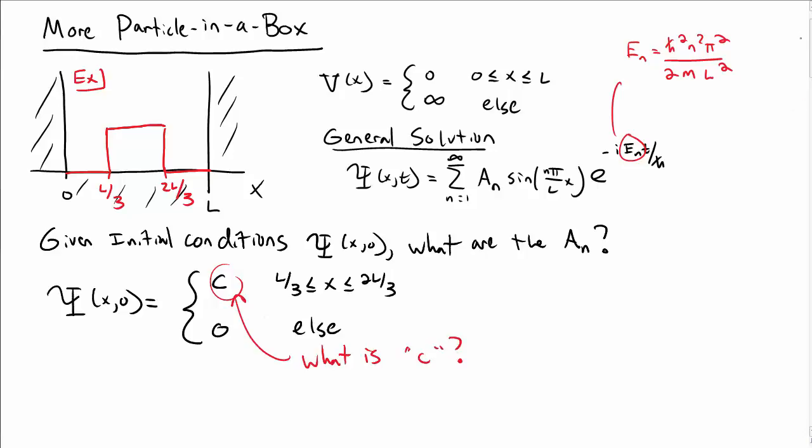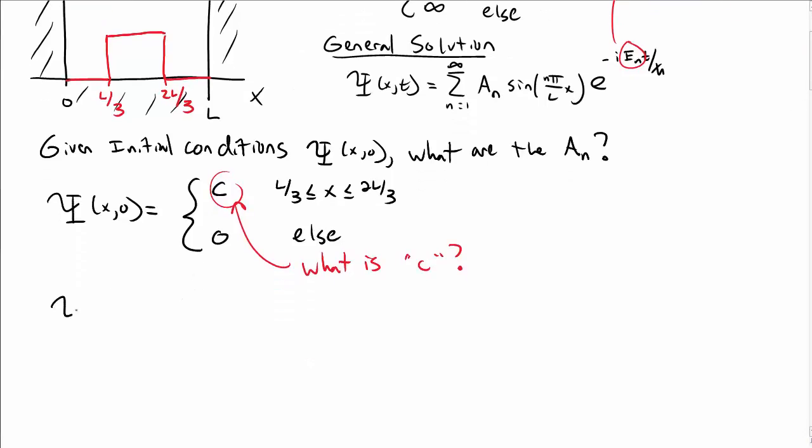First, we need to determine what is this constant C. Well, we need to enforce that our wave function is normalized so that the total probability of finding the particle is 1, even for the initial condition.